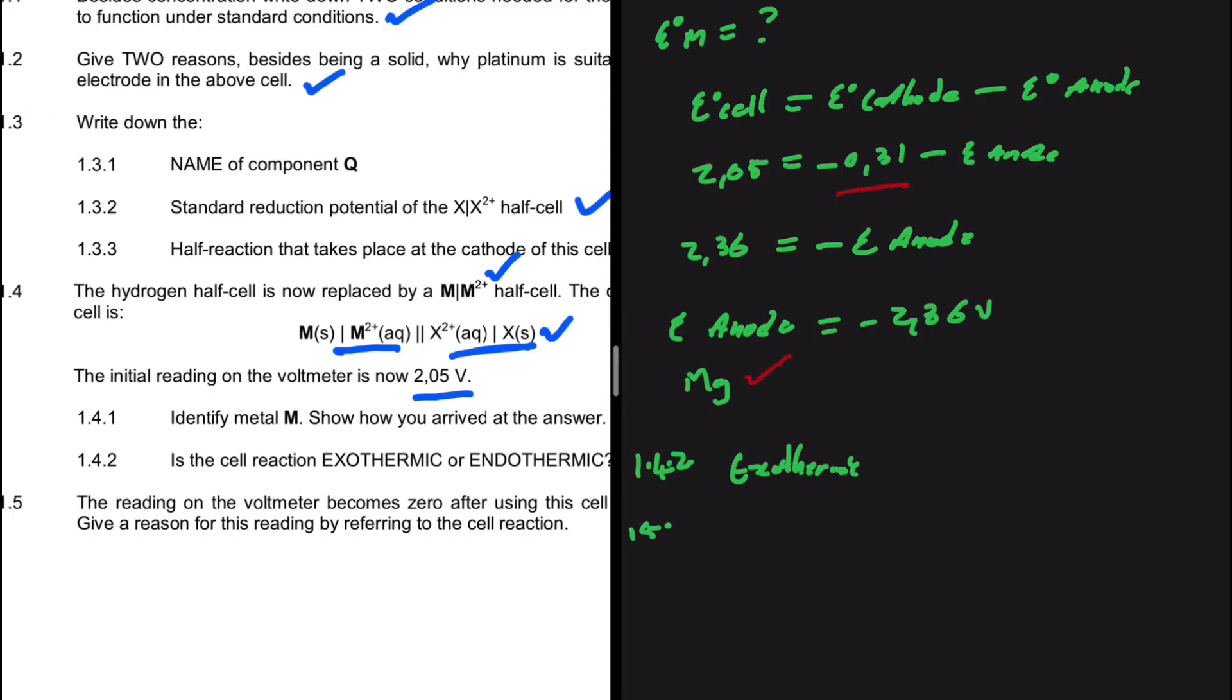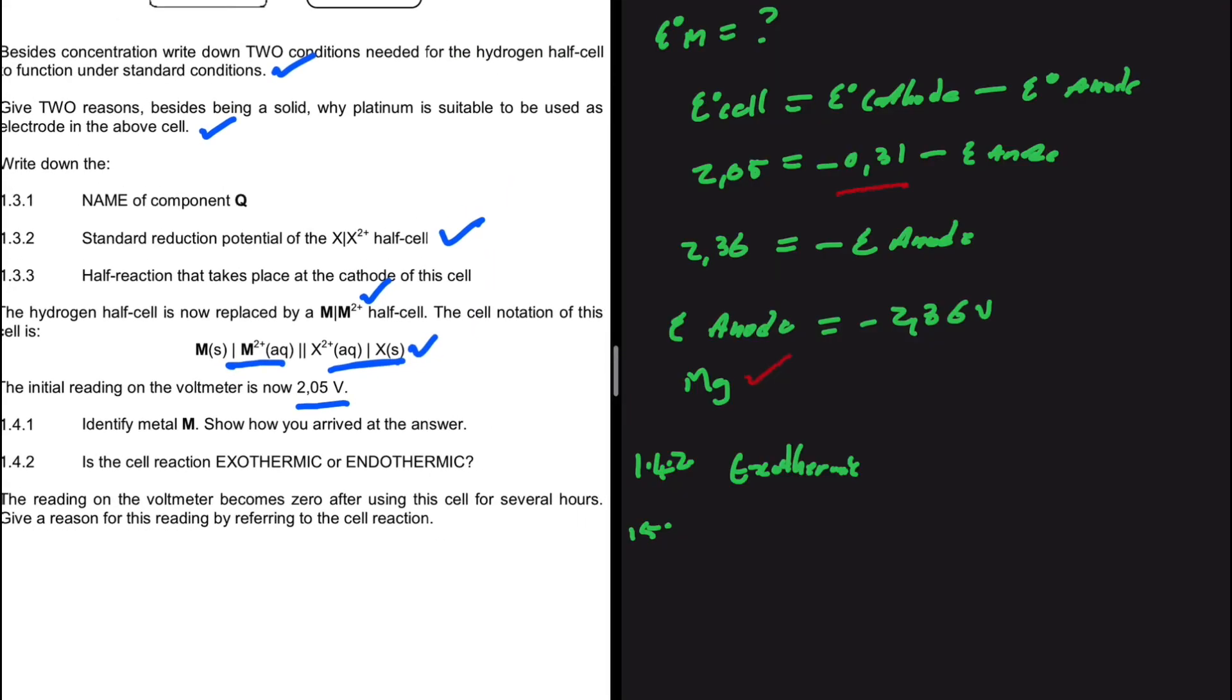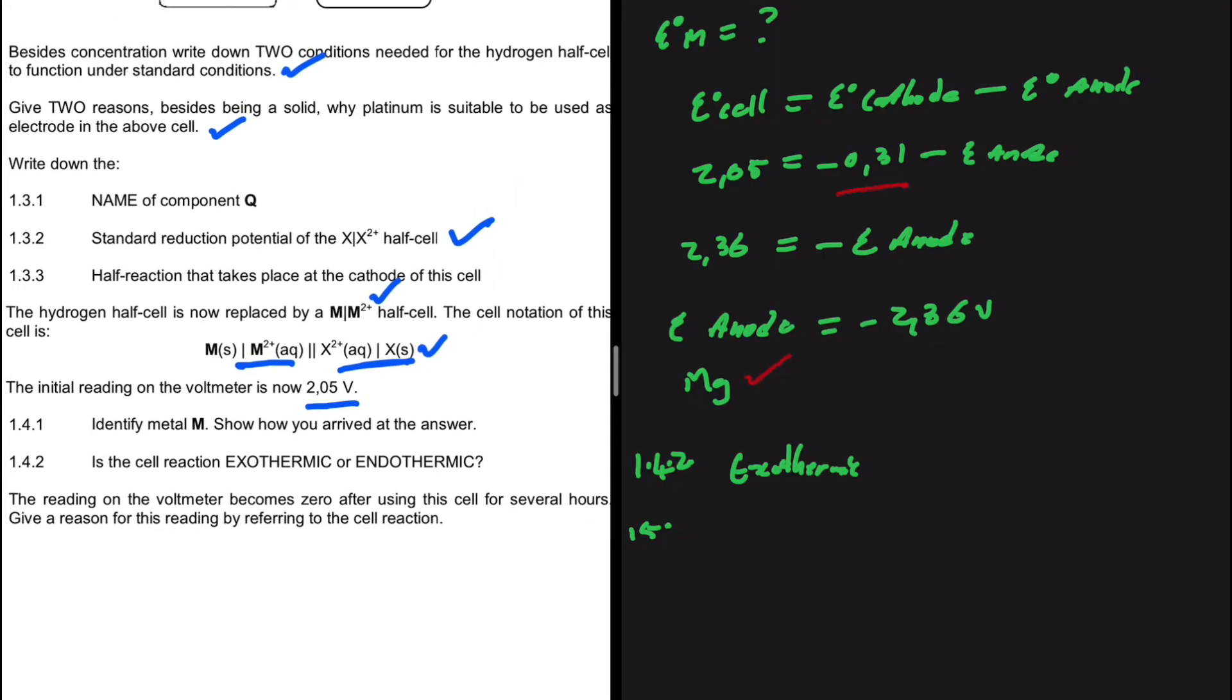1.5. The reading on the voltmeter becomes zero after using this cell for several hours. Give a reason for this reading by referring to the cell reaction. Well, the cell reaction reaches equilibrium. That is why the reading on the voltmeter becomes zero after some time.